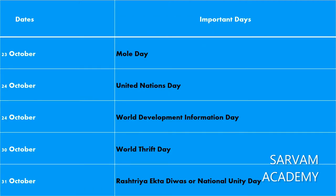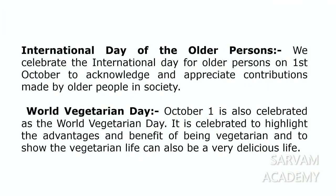October 23 is Mold Day. October 24 is the very important United Nations Day, and also World Development Information Day. October 30 is World Thrift Day. October 31 is Rastriya Ekti Divaas, or National Unity Day. Next, we are going to see one by one, in detail, these important days.